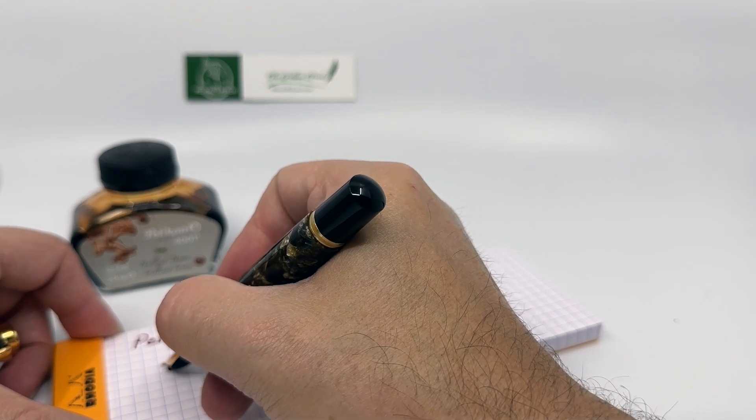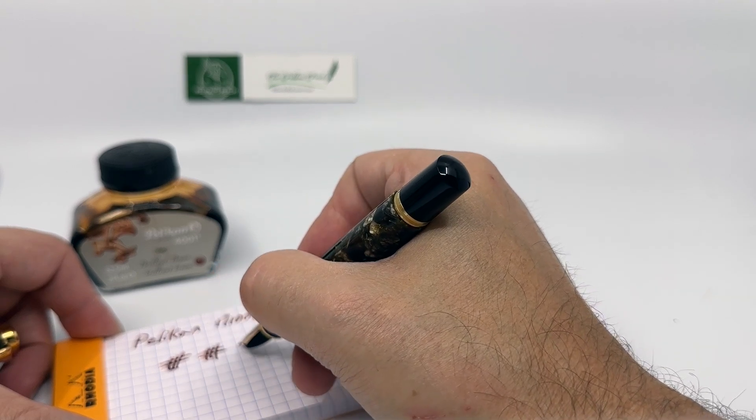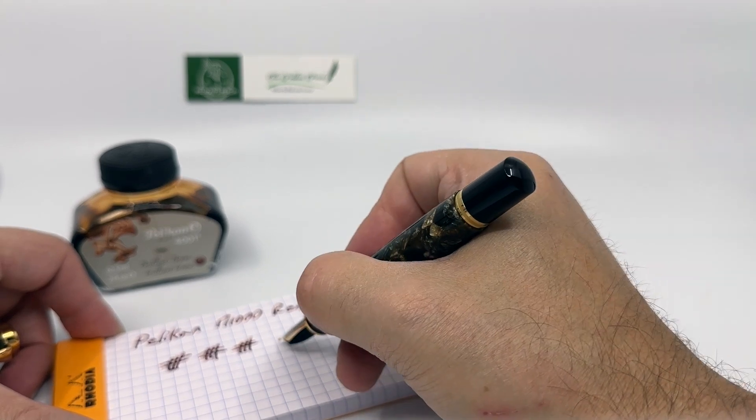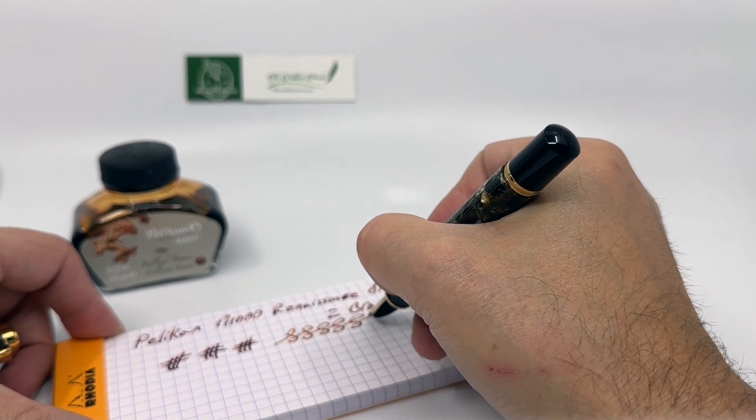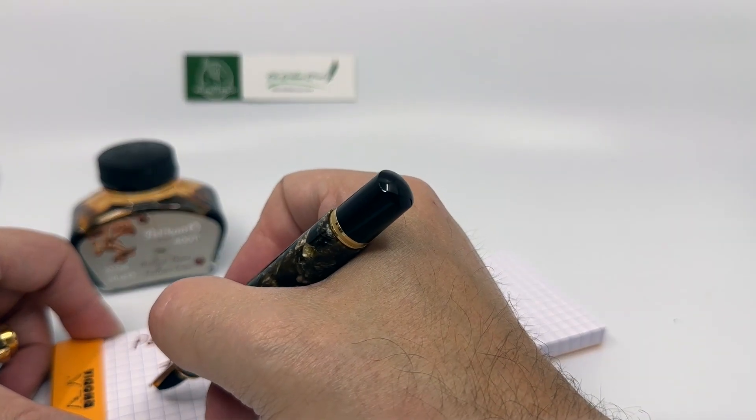The reason I went with the broad nib is because this is already a very wet and juicy line, and you can get, with a little bit of flex, even greater variations. So depending on the ink you're using, you can get some nice shading depending on the effect you're going after.